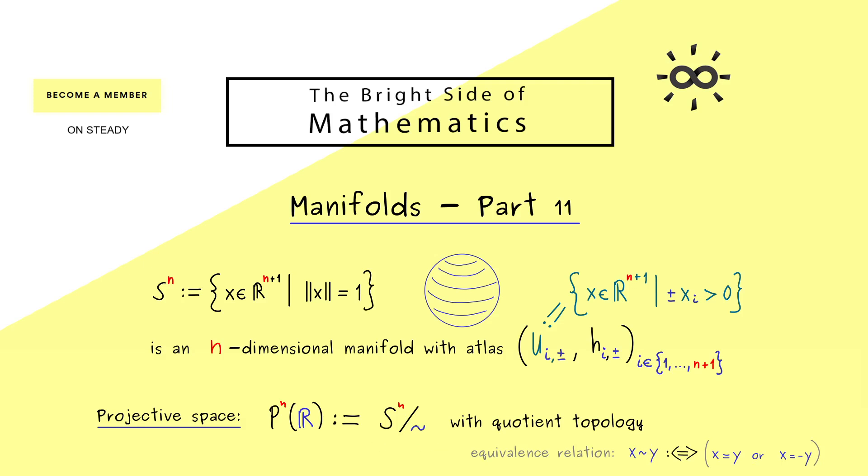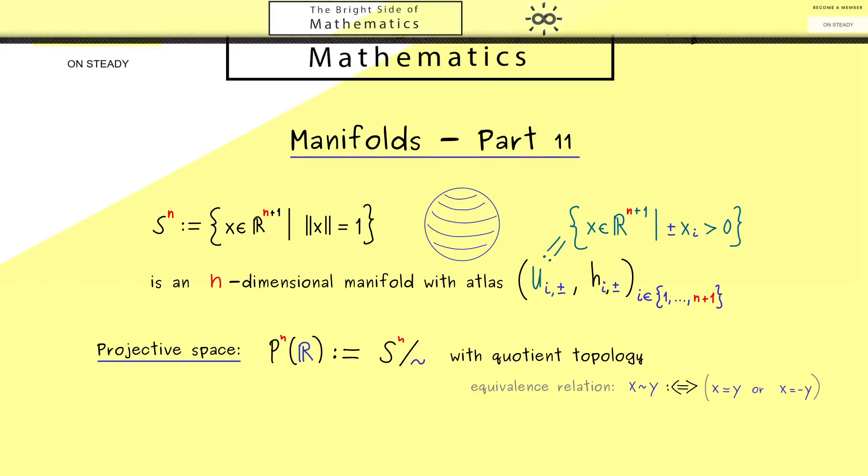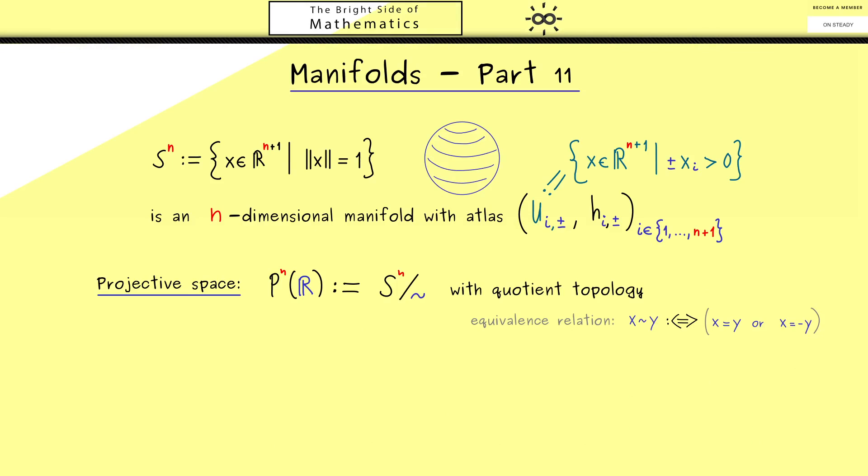Hence this is a well-defined equivalence relation and it gives us the projective space as a quotient space. Moreover, in this case we have a canonical projection which is also continuous. Usually we call this special map just q. Here please recall it just maps the point x to its equivalence class.